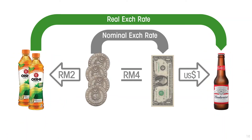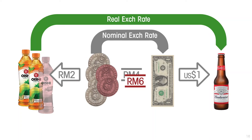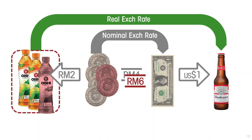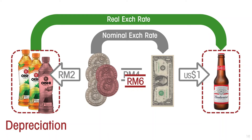Let's do another exercise and look at how the real exchange rate is affected by a change in the nominal exchange rate. If we have a nominal depreciation — a nominal increase in the exchange rate from 4 to 1 to 6 to 1 — then to get the dollar to buy the beer we need 6 ringgits, and therefore 3 bottles of tea. That's the same depreciation we looked at before. So in terms of the effect on the real exchange rate, US inflation has the same effect as a nominal exchange rate increase.